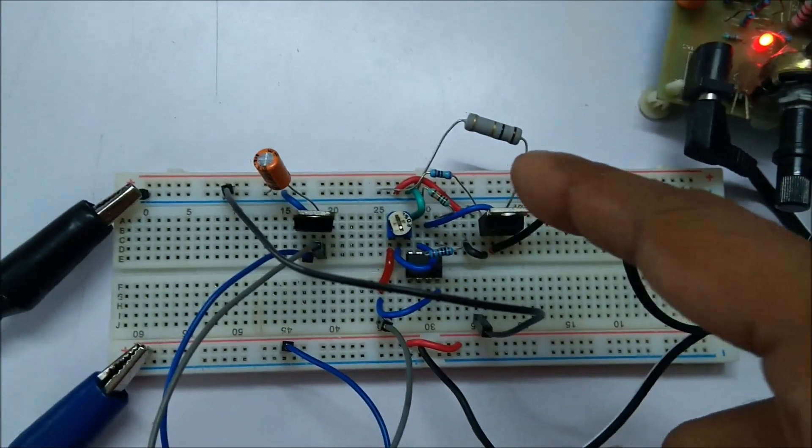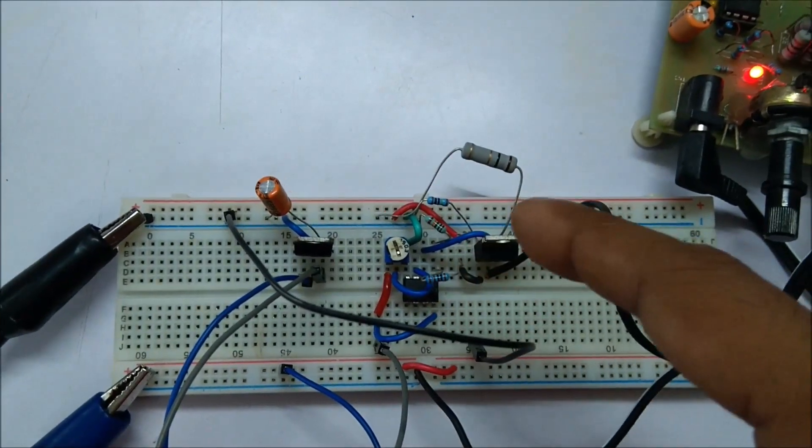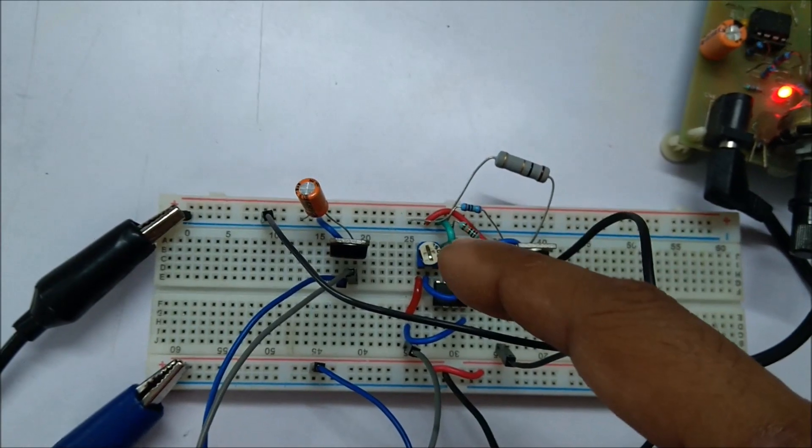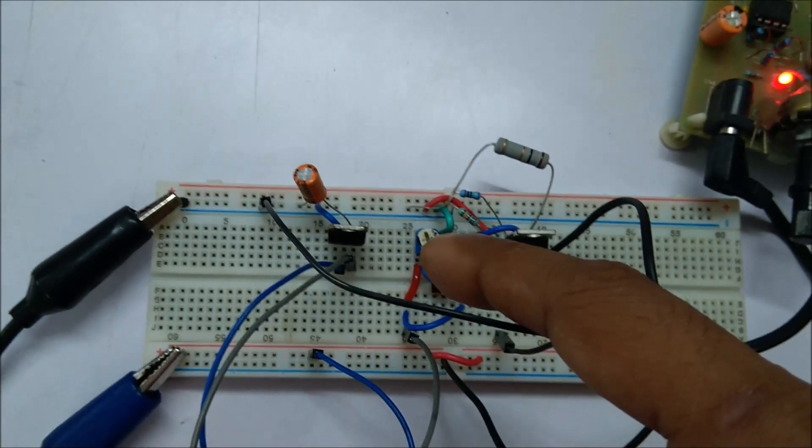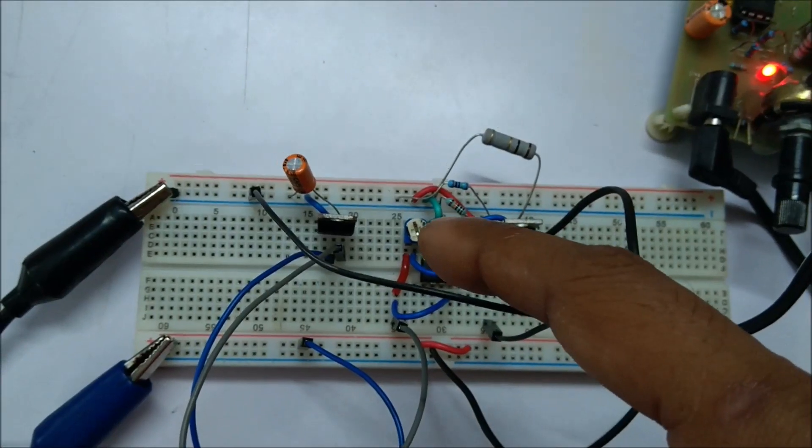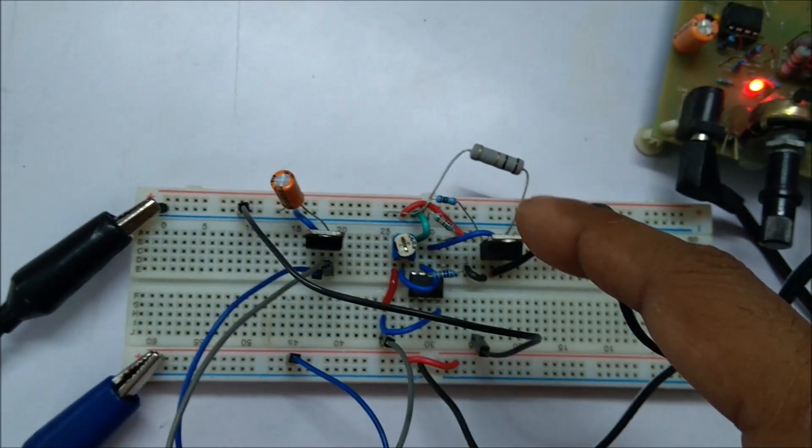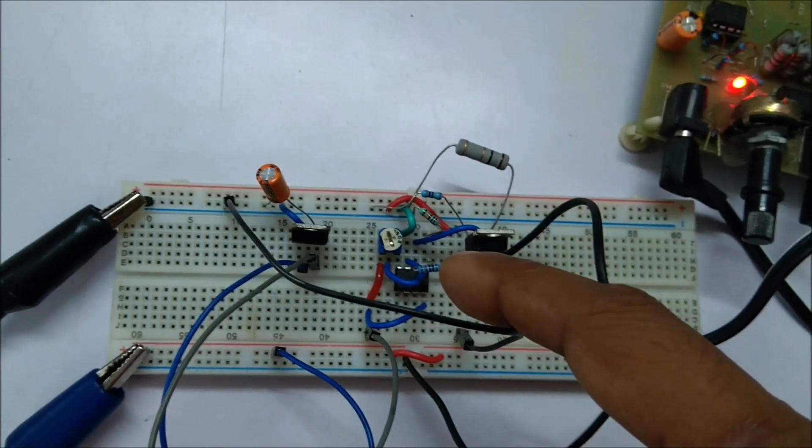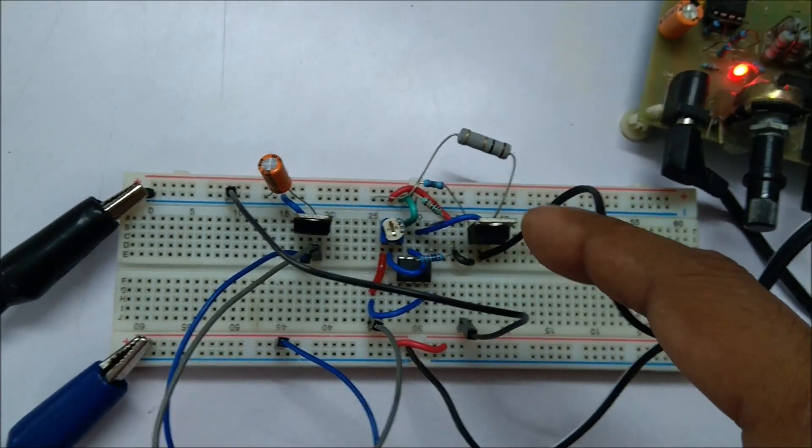The operational amplifier is getting this 1 volt and also getting a reference voltage from this voltage divider using this potentiometer. It is already set to 1 volt. So if this voltage gets higher than 1 volt, the operational amplifier will trigger this MOSFET off.